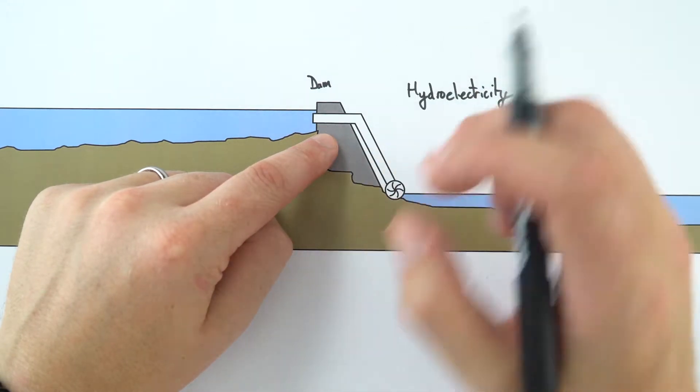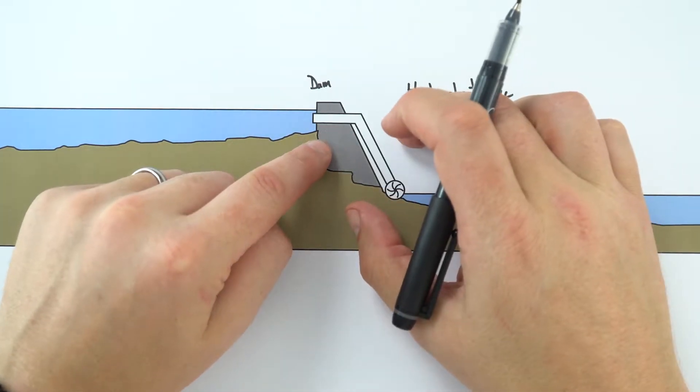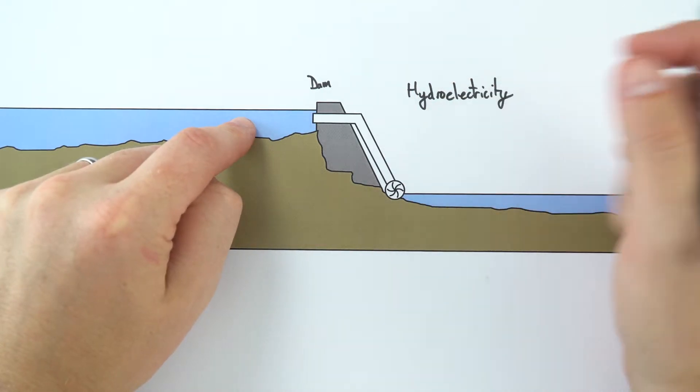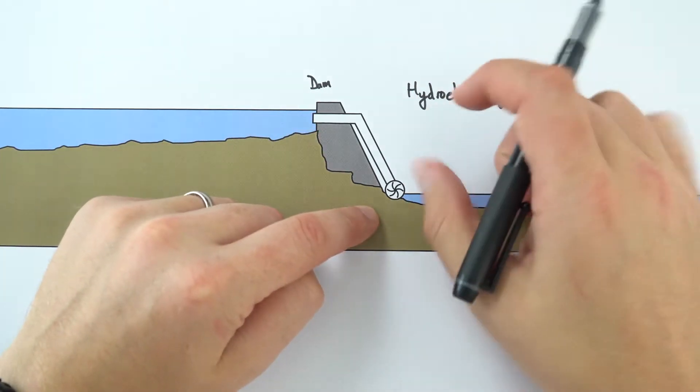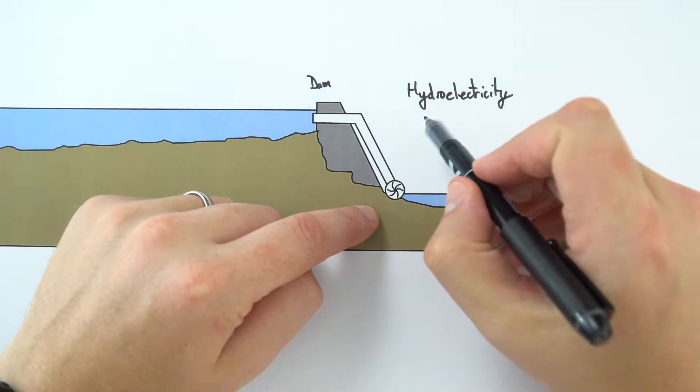So this one here, when you have water which is held us to height and then it flows through a turbine down to a lower level, is known as hydroelectricity.